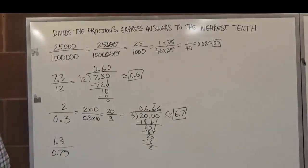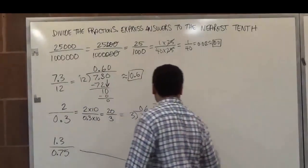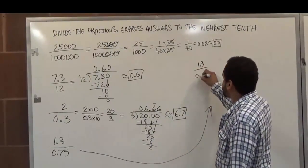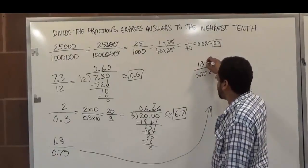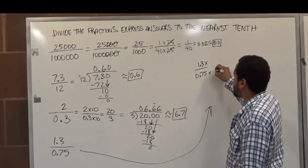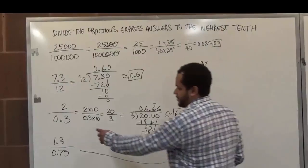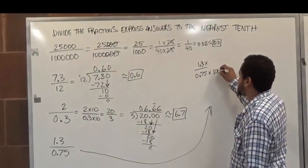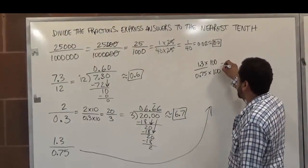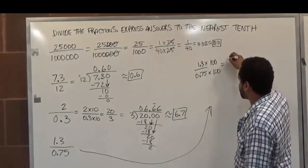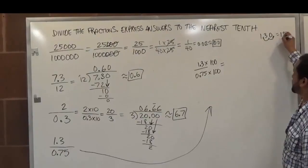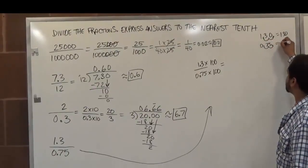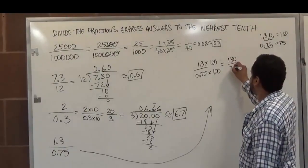Moving on to the next problem, we have a different problem where we're dividing a decimal by another decimal in the fraction system. We have one point three divided by zero point seventy-five. We cannot divide with this decimal number, so we must multiply the top and bottom of the fraction by a number that gets rid of the decimal of the denominator. To get rid of this one, we're going to need two position shifts. So instead of just having ten for a single position shift, we're going to use one hundred, which has two zeros and gives a double position shift. One point three times one hundred becomes one hundred thirty, and zero point seventy-five times one hundred becomes seventy-five.